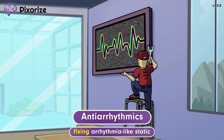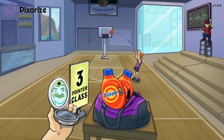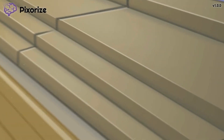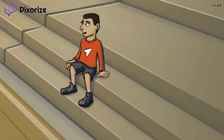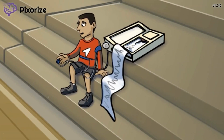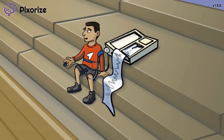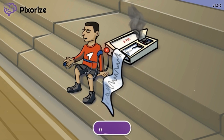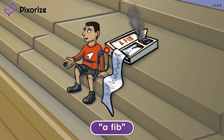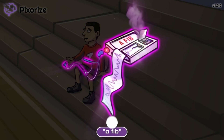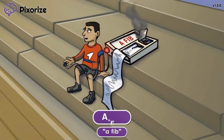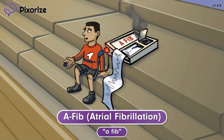So what types of arrhythmias do these drugs treat? School security has caught a suspect and put them into a lie detector for interrogation. However, the lie detector is malfunctioning — it is reporting everything the boy says as a fib, as in a lie. The phrase 'a fib' should remind you of AFib, which is short for atrial fibrillation.